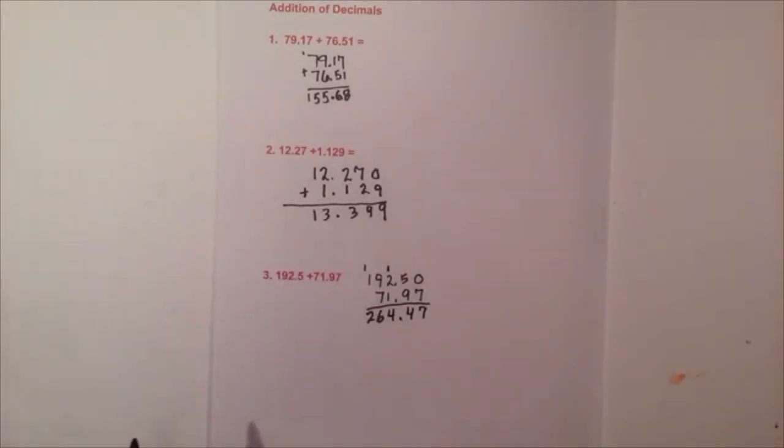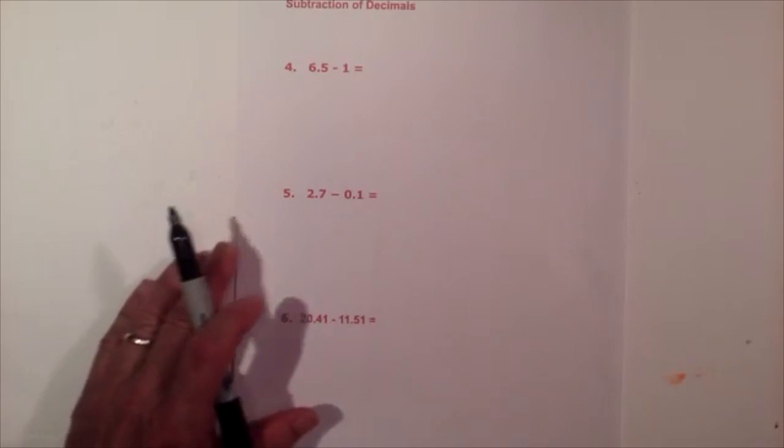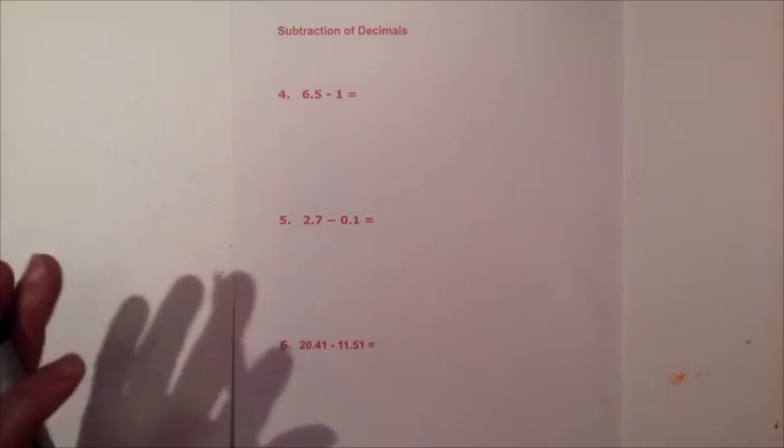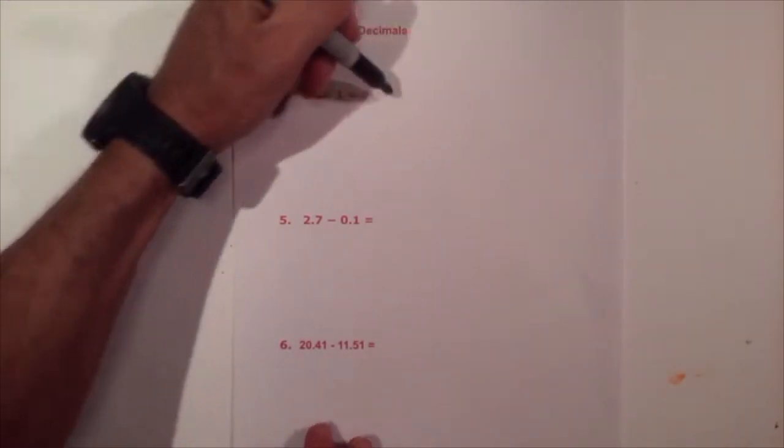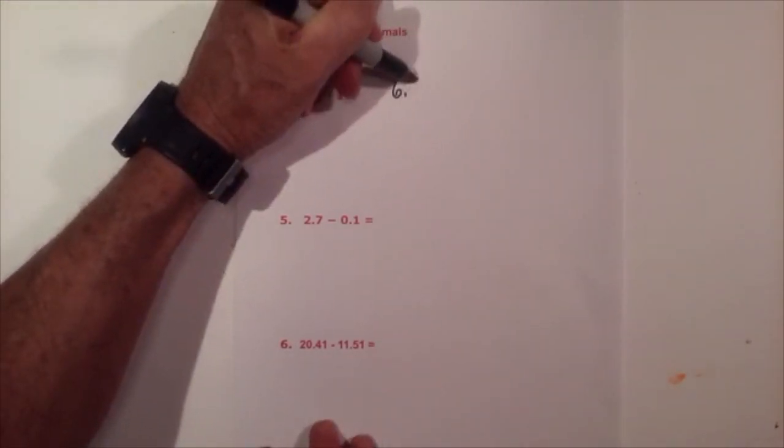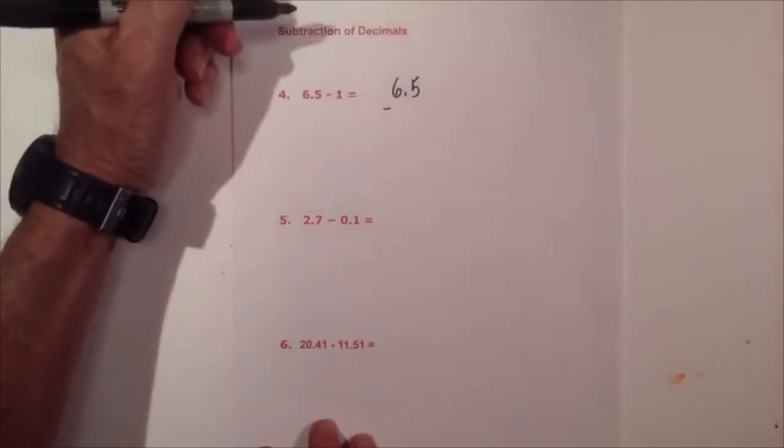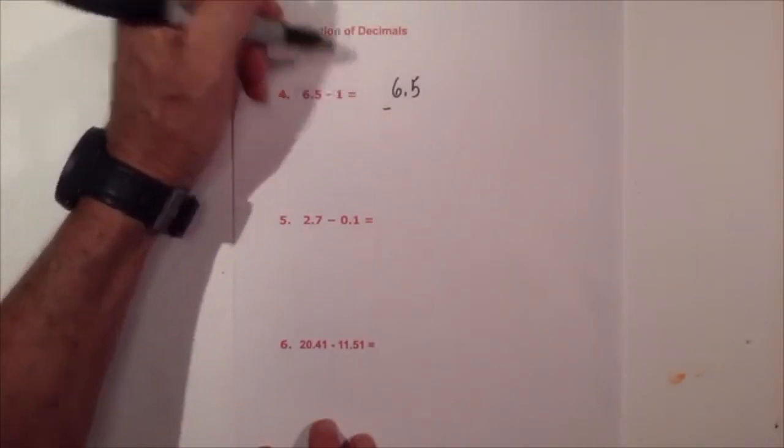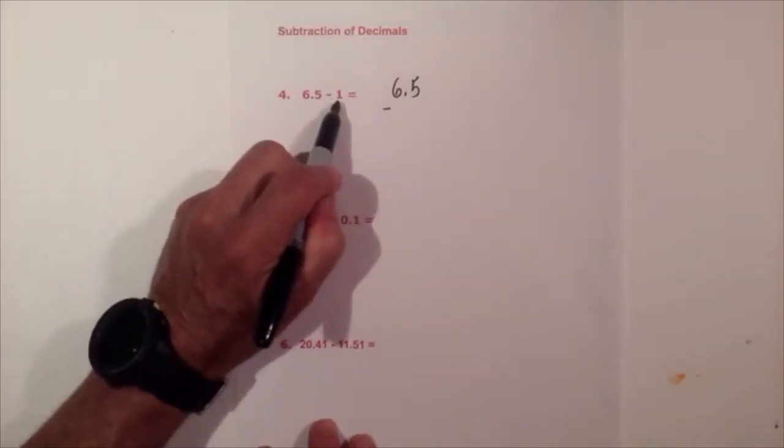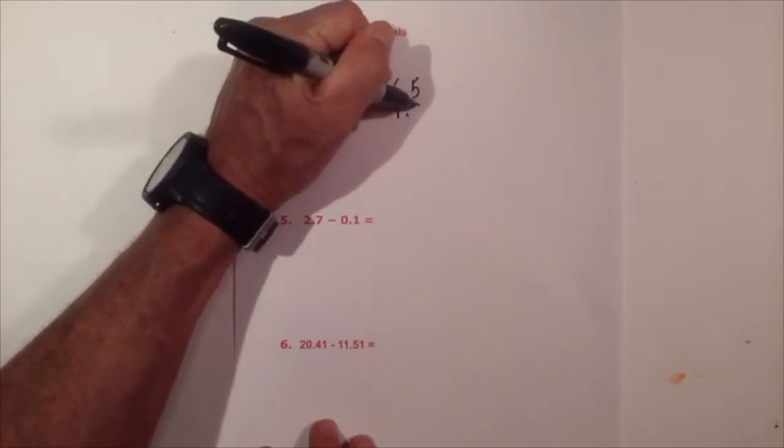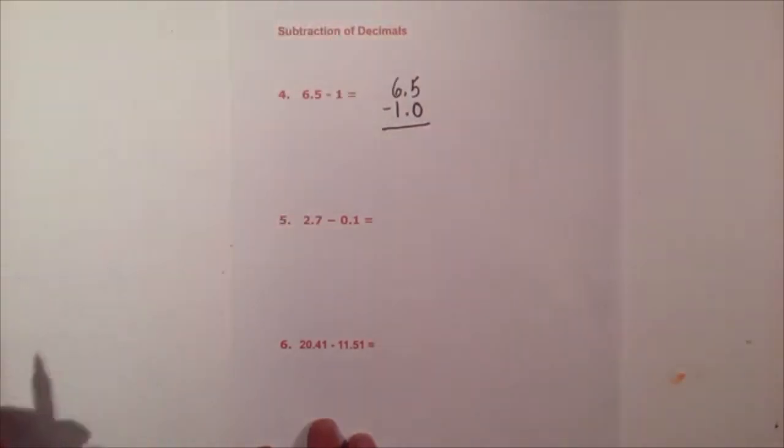Now let's move on to subtraction. When we subtract decimals, we do the same thing in that we need to line up the decimals. We have 6.5 minus 1. Well, 1 does not have a decimal. It has a decimal but if you don't see it, it's going to be right at the end. So I'm going to put 1 point and then I'm going to add a 0.